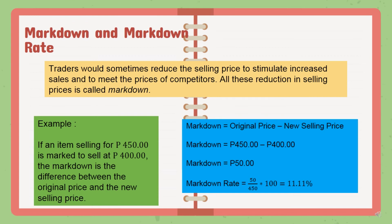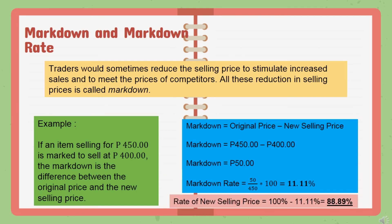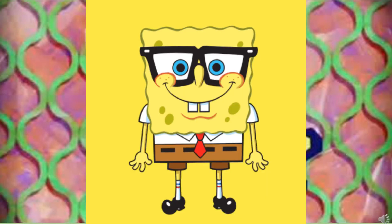To compute the markdown rate, divide the markdown amount by the original price and multiply by 100. So: 50 pesos / 450 pesos × 100 = 0.1111 × 100 = 11.11%. That is your markdown rate. To find the rate of the new selling price relative to the original price, subtract the markdown rate from 100%: 100% − 11.11% = 88.89%. So 88.89% is the rate of the new selling price versus the original price.